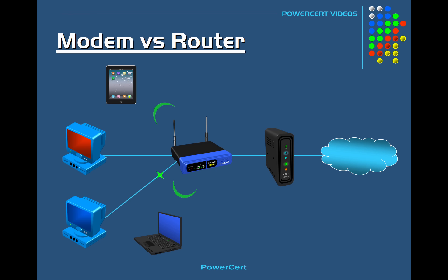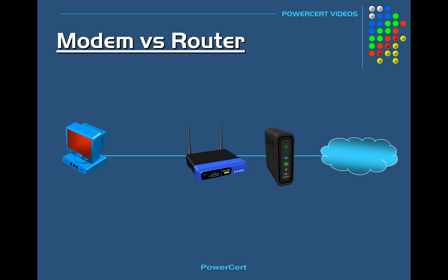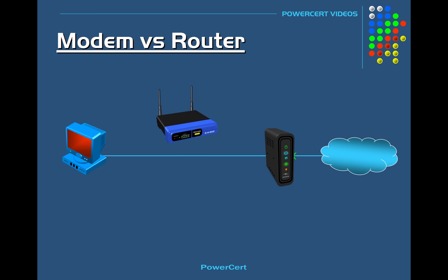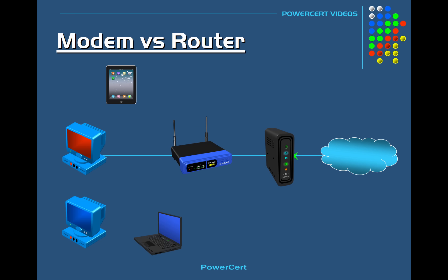Technically you don't need a router if you only want one device to access the internet. You can just plug that device's network cable directly into the modem and you'll be able to access the internet. However, like most homes and businesses, you're going to have multiple devices that need access to the internet, and that's where you would need a router.